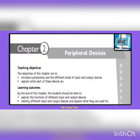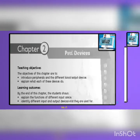Dear students, let's begin with chapter number 2, Peripheral Devices. By the end of this chapter, you will be able to explain the functions of different input and output devices. You will be able to identify different input and output devices and explain what they are used for.